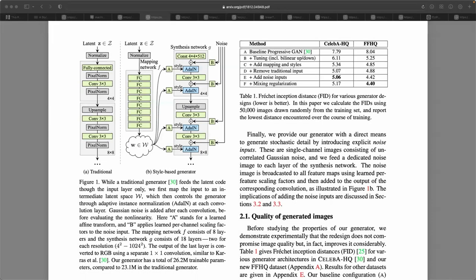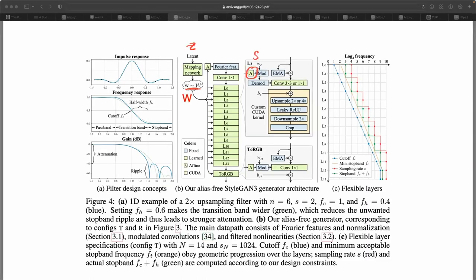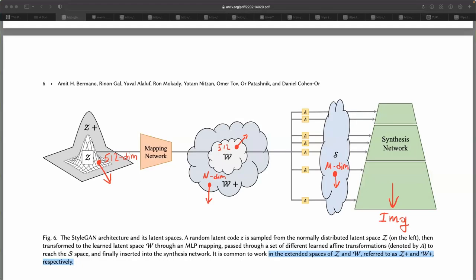In the original StyleGAN architecture, these allocations of Z, W and S spaces in the dataflow pipeline are similar in StyleGAN 3 architecture. A generated image can be represented as a point in any of these high-dimensional spaces. Thus, editing of a generated image happens through a displacement of a point in one of these high-dimensional spaces.